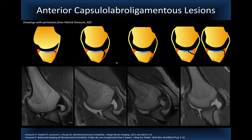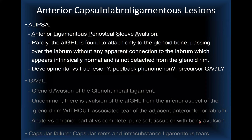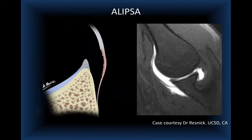ELSA (anterior ligamentous periosteal sleeve avulsion) is when the periosteum and ligament-capsule are stripped but the labrum is intact. It is uncertain whether it is a developmental or true lesion; some believe it is related to a peel-back phenomenon and a precursor to the GAGL lesion. Two cases courtesy of Dr. Nico from UCSD show the stripped capsule with the labrum intact, and slight stripping of the anterior band of the inferior glenohumeral ligament and capsule still attaching to the glenoid.